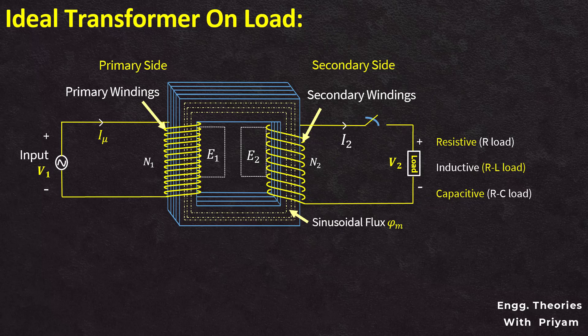Now, according to Lenz's law, this current should oppose its cause. The load current in the secondary winding I2 is generated due to the EMF induced in the secondary winding E2. The induced EMF is generated due to the electromagnetic induction of the alternating flux phi m. So, the current in the load or in the secondary winding should generate a flux whose direction is exactly opposite to the main flux flowing in the core, phi m.